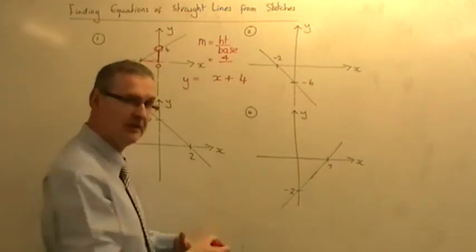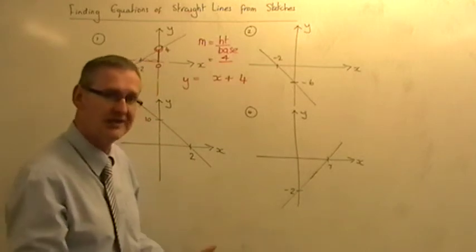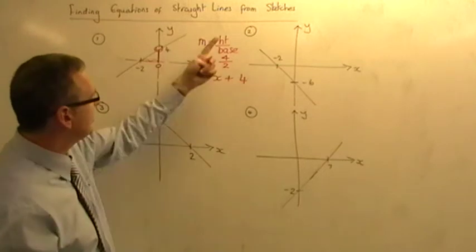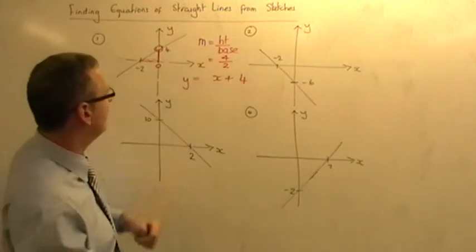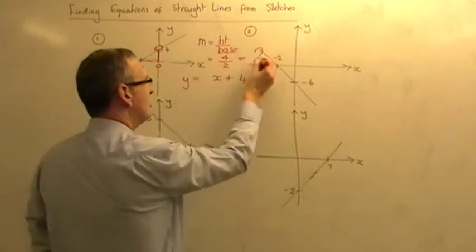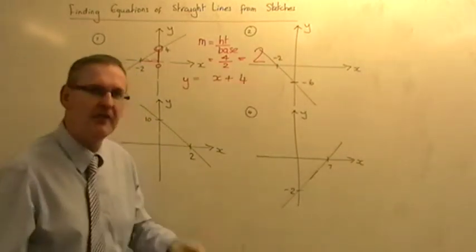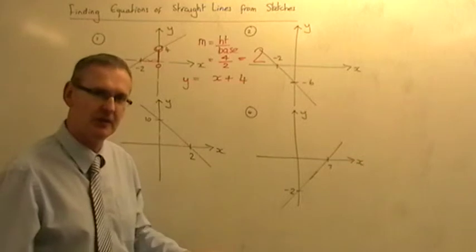The fact that it goes from 0 to minus 2 doesn't matter, it is two steps. So what we do is height divided by base, 4 divided by 2, and that gives you an answer of 2. Now, finally, this is where the sign of the slope comes in.